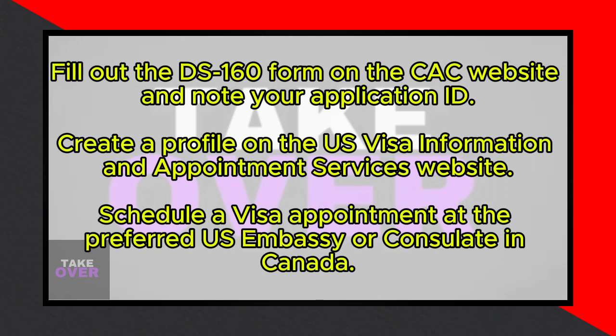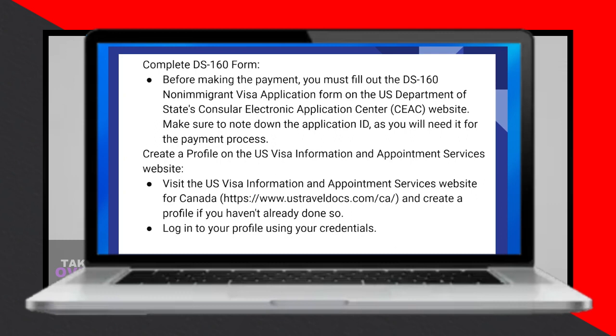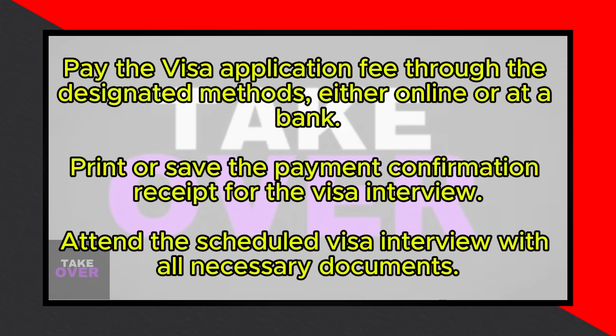Once you've scheduled your appointment, it's time to pay the visa application fee. The payment process might differ slightly based on the visa type and location, but generally you can choose from various methods. The most common one involves logging into your profile on the U.S. visa information and appointment services website, navigating to the payment section, entering your payment details, and completing the transaction.